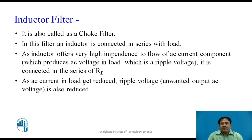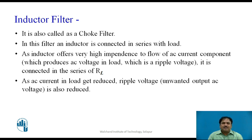The inductor offers very high impedance to the flow of AC current. So all the AC power supplied by the output of the rectifier is dropped across the inductor, which ensures that only a very small amount of AC current passes through the load. This means that with the help of this inductor filter, we create a very high amount of DC power and a very small amount of AC power — the AC power being called the ripple. The filter is the circuit that reduces the ripple and passes the DC. That is why we connect this inductor in series with the load. This is also called a choke filter.